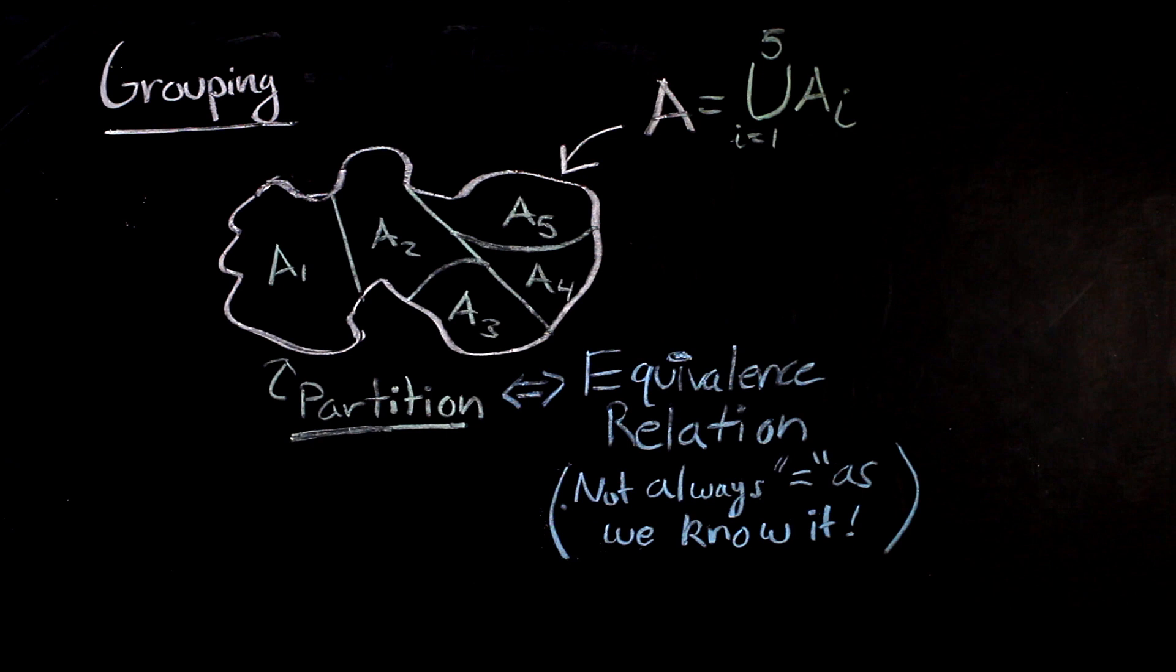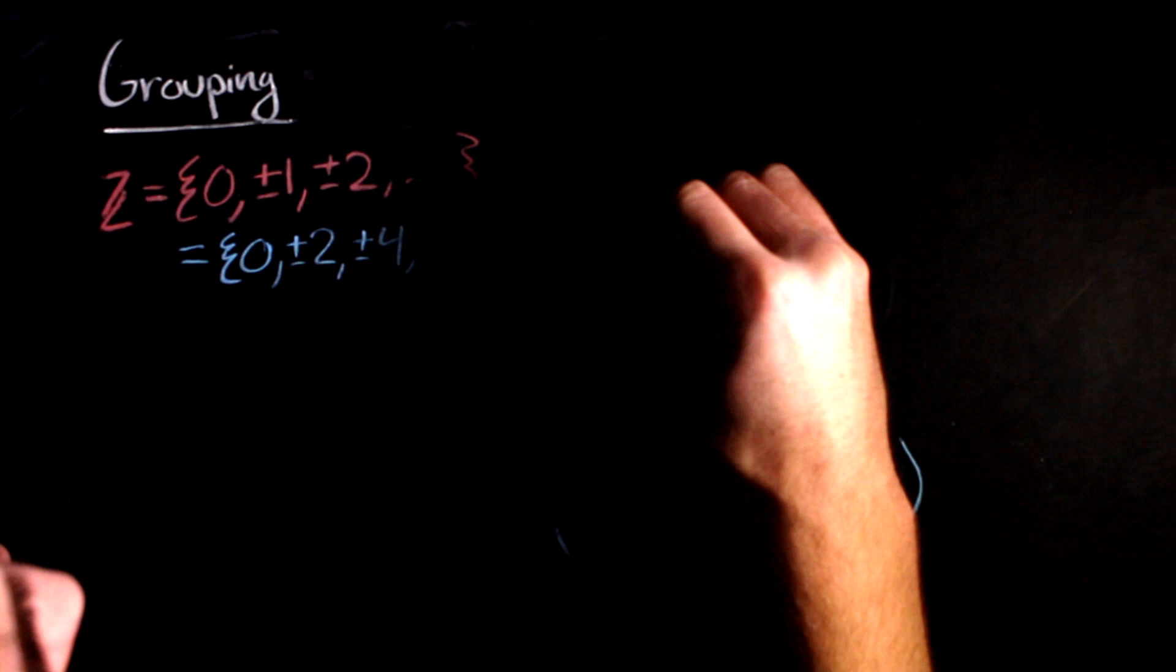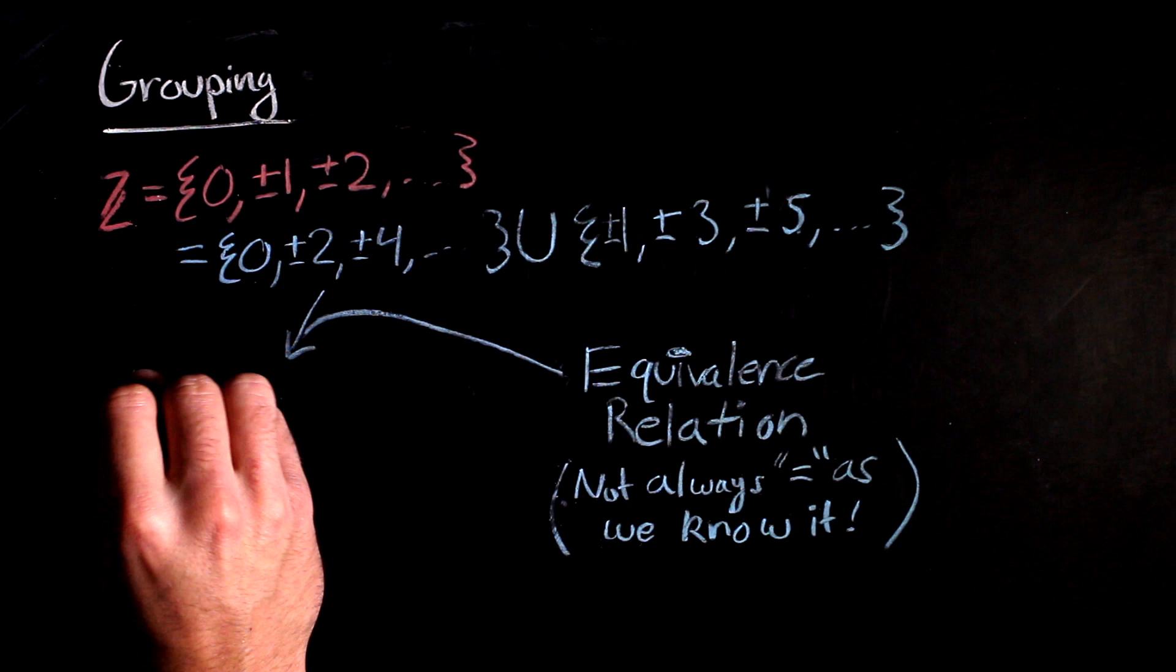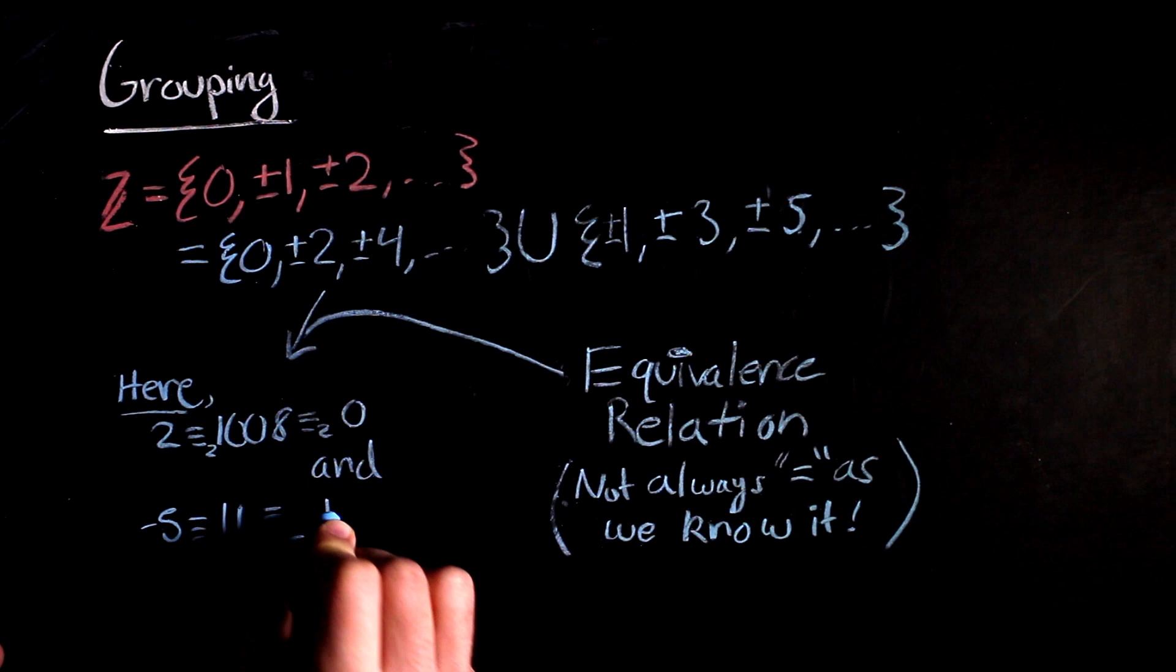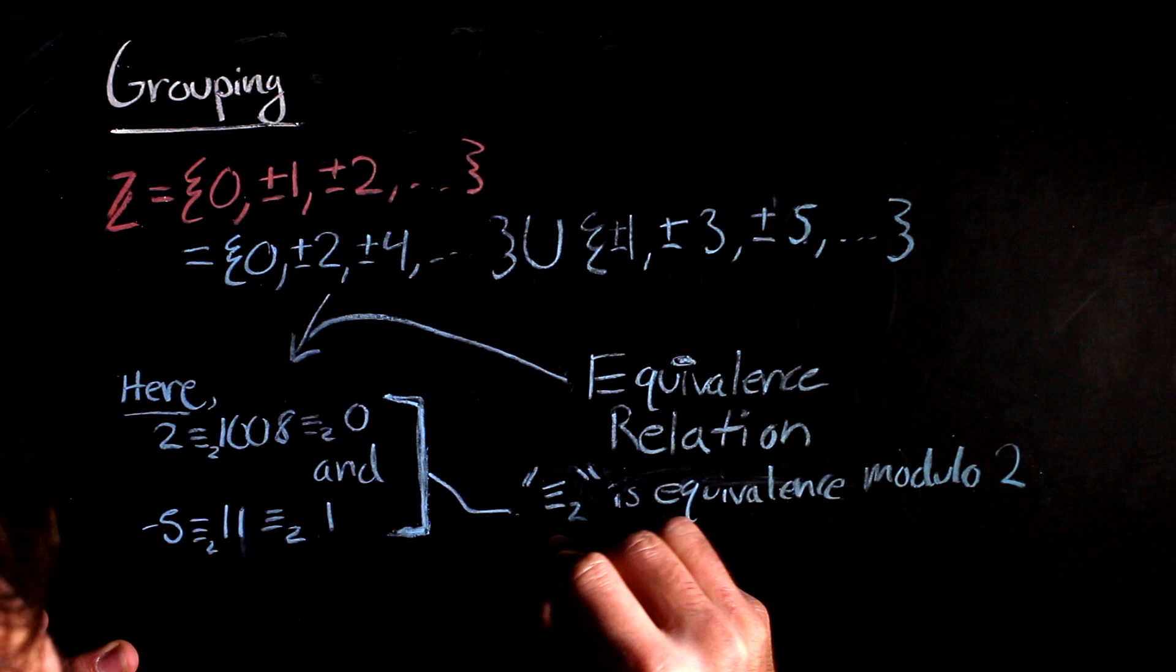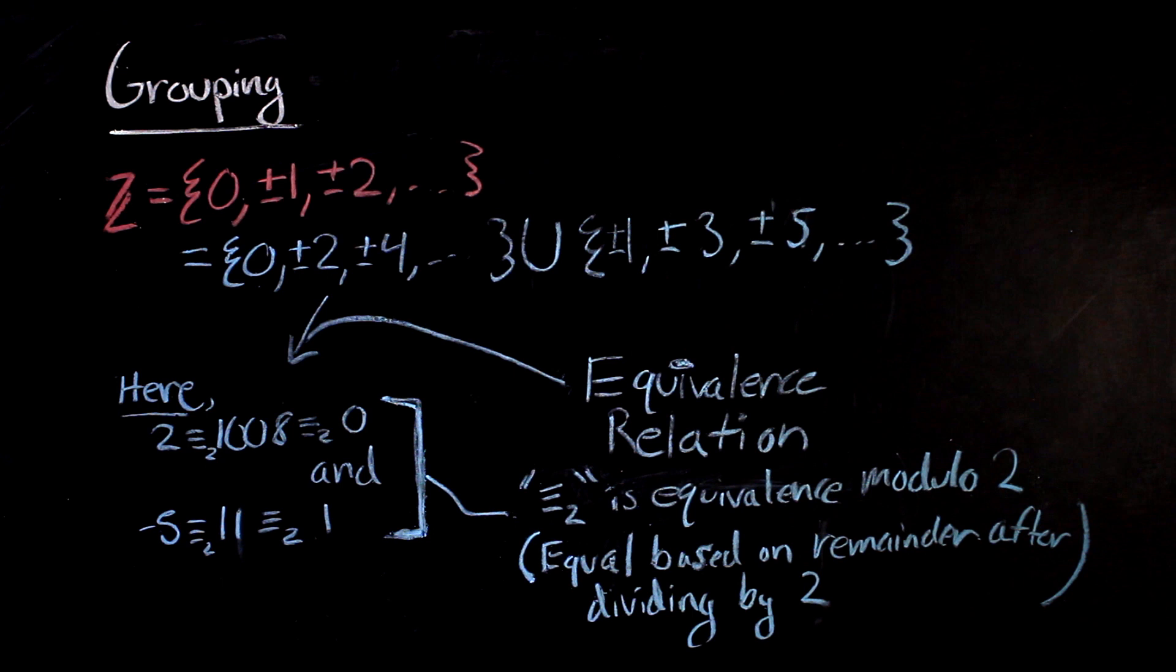For example, take the integers and break them up into the even and odd integers. Essentially, this partition equates even numbers to other even numbers, and odd numbers to other odd numbers. So 2 is equal to 1008, and negative 5 is equal to 11. In fact, this is the equivalence relation given by comparing remainders after dividing by 2, otherwise known as equivalence modulo 2. All the evens have remainder 0 after dividing by 2, and all the odds have remainder 1 after dividing by 2.